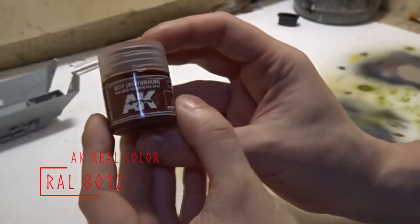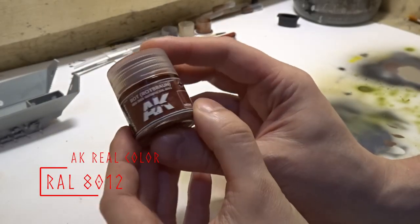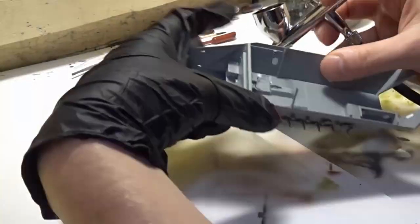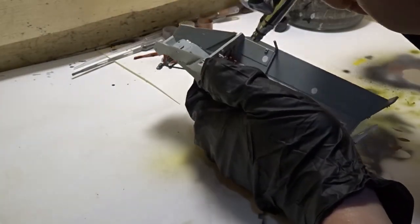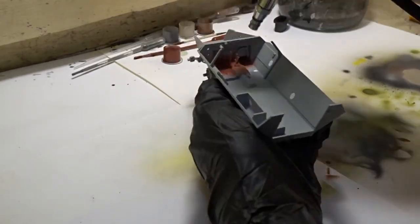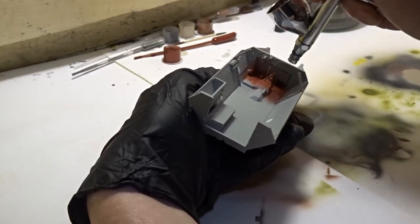Hello everyone, welcome back to Floki's Models. Let's jump right into the painting of the interior. First color to go down is AK Real Color's RAL8012, thinned 1 to 1 with Mr. Leveling Thinner, then sprayed at around 18 PSI.